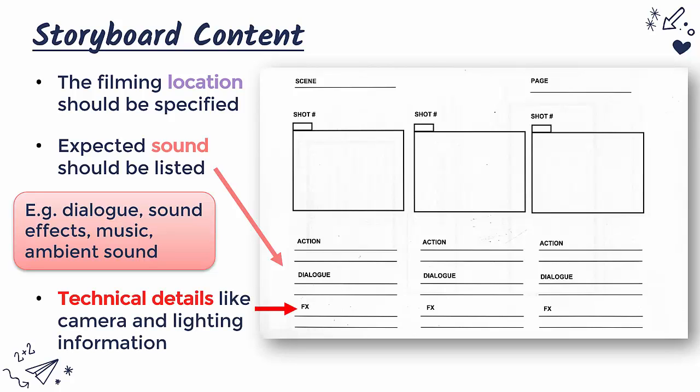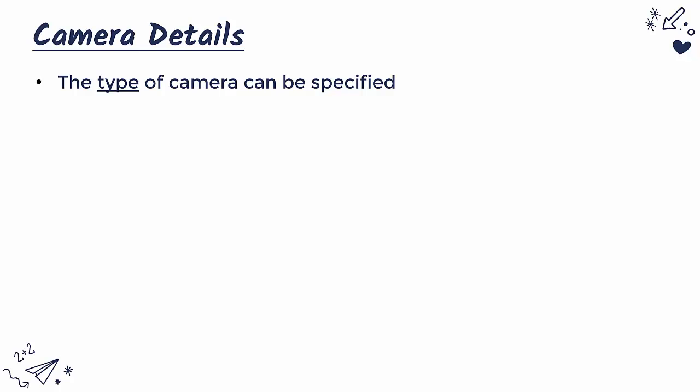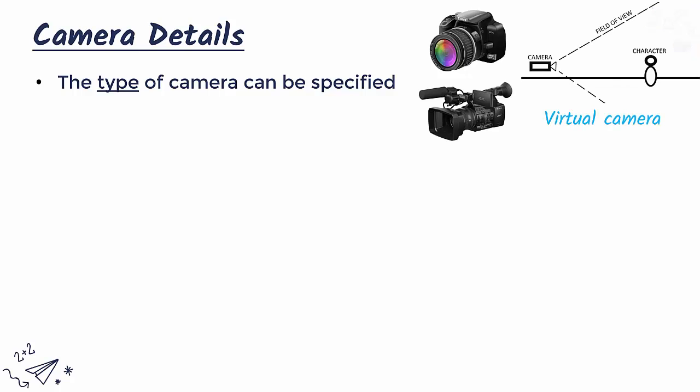Finally there are other technical details, often shortened to FX for effects. There are many considerations for how exactly the camera is going to be filming your product. First, the actual type of camera can be specified — is it a still image camera for stop motion, a proper film camera, or if you're making a video game, a virtual camera? The virtual camera is not literally a camera, but you need to decide the angle, and you may actually draw a virtual camera in your storyboard box to show where the angle comes from.